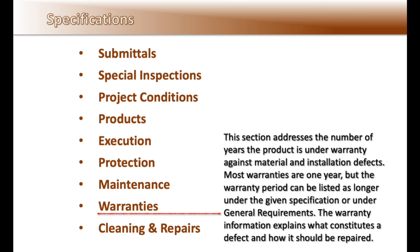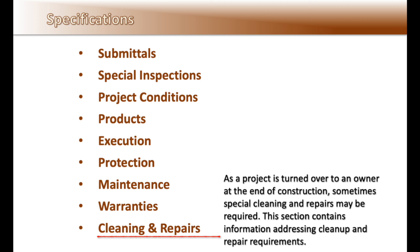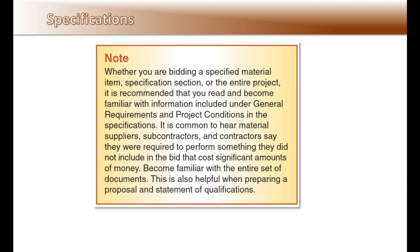The warranty information explains what constitutes a defect and how it should be repaired. As a project is turned over to the owner at the end of construction, sometimes special cleaning and repairs may be required. This section contains information addressing cleanup and repair requirements. Whether you are bidding a specified material item, specification section, or the entire project, it is recommended that you read and become familiar with the information under general requirements and project conditions. It is common to hear subcontractors and contractors say they were required to perform something they did not include in their bid that cost significant amounts of money. Become familiar with the entire set of documents.